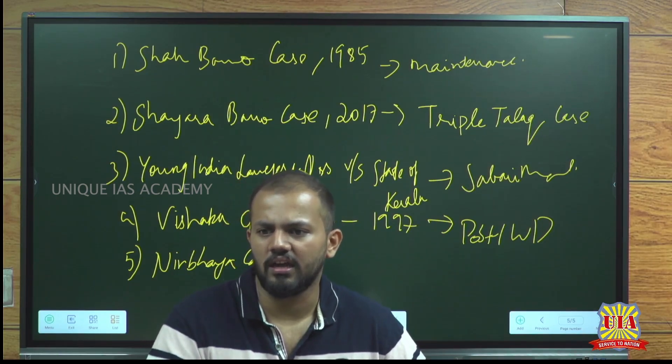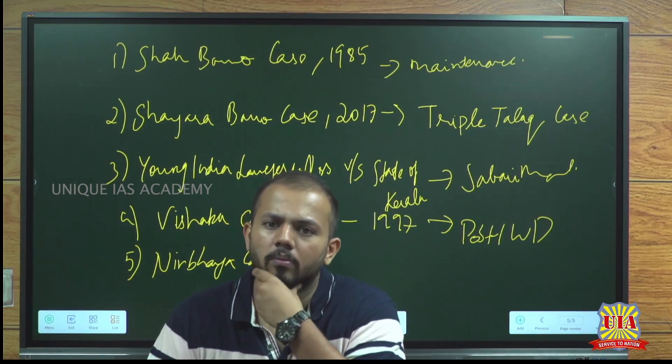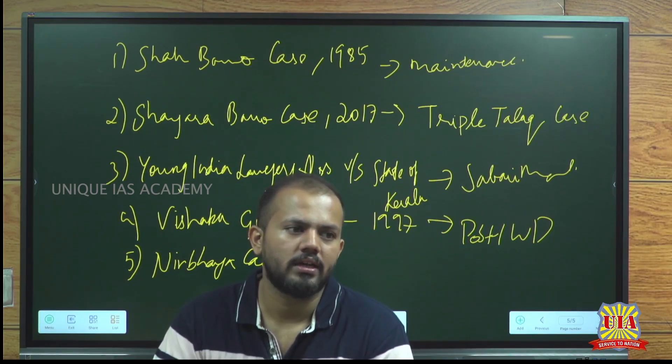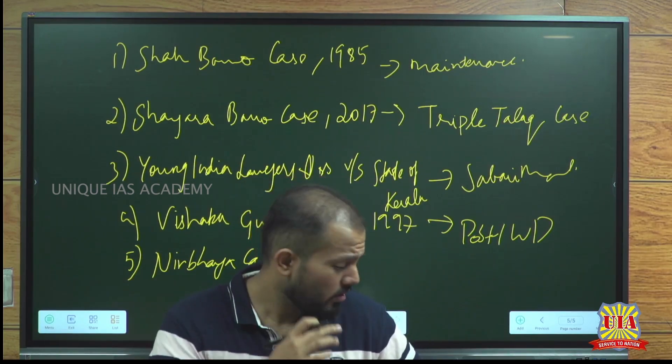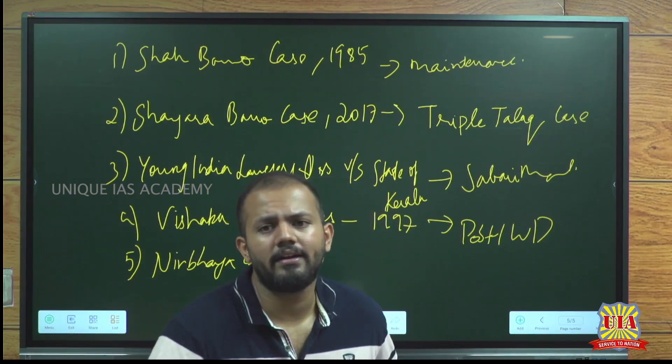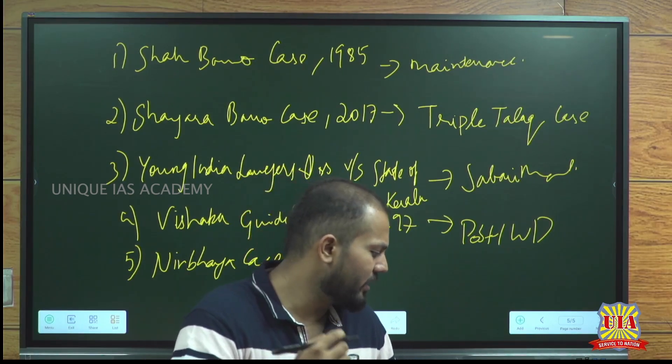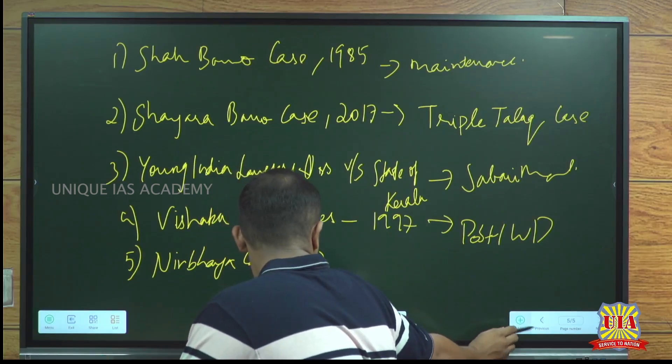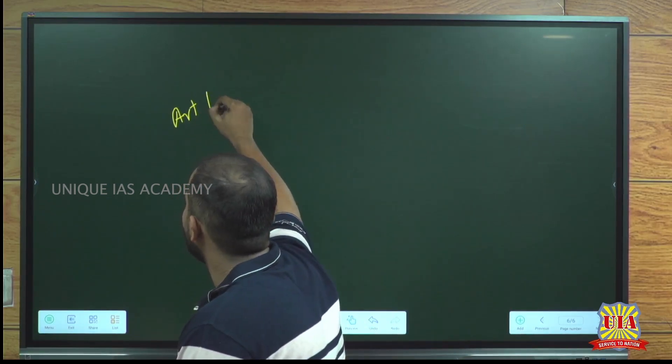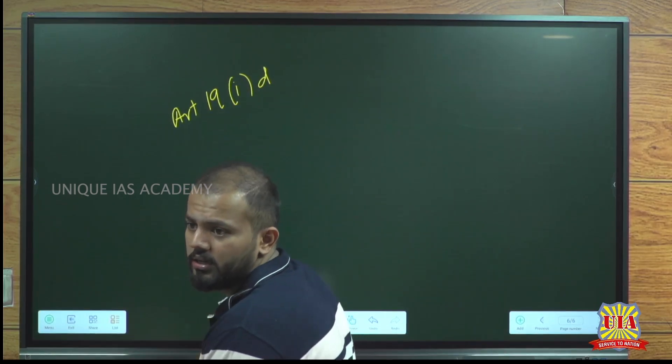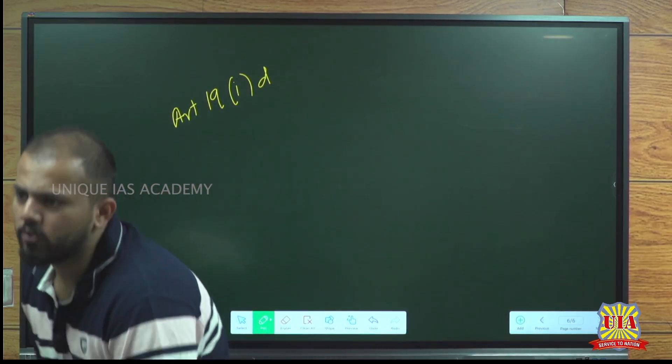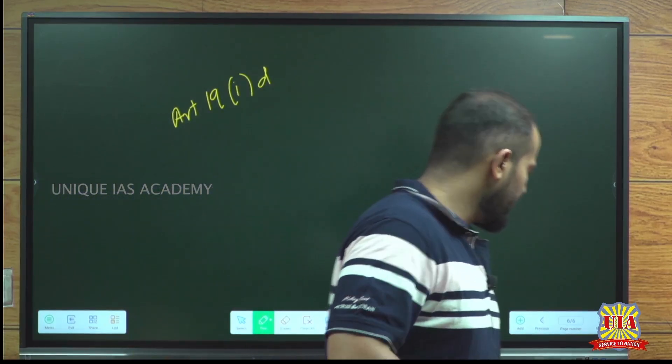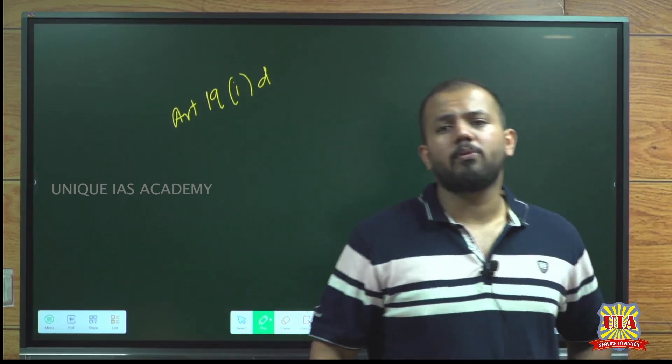So in the reasonable restrictions, this particular article - Article 19 clause 1 clause D - gives the right to movement and residence throughout the territory of India. You can start with Article 19(1)(d), which is giving you the right to reside and move throughout the country freely without any restrictions. You can state in the restriction what type of freedom that it gives.